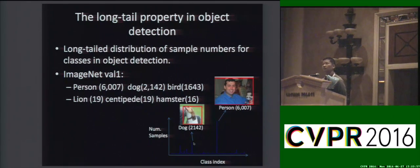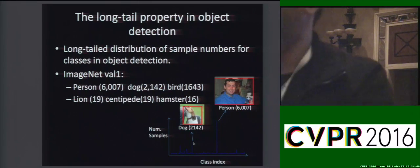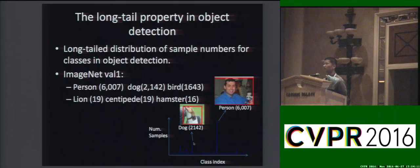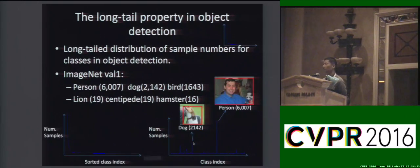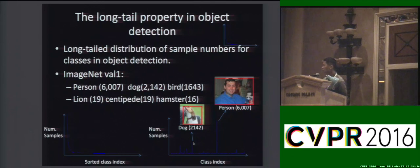The main motivation is that we observe the long tail distribution in sample numbers for object classes. On the ImageNet Object Detection Validation 1 dataset, for the class person there are about 6,000 samples. However, for lions and hamsters, there are less than 20 samples. So if we sort the object classes according to their sample numbers, we will find a long tail on the left figure. The head corresponds to person, which has a large number, and the tail corresponds to the lion, which has a small number of samples.